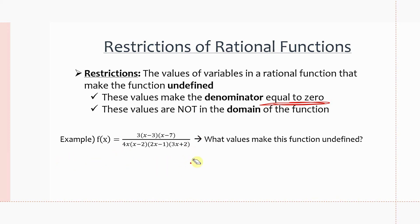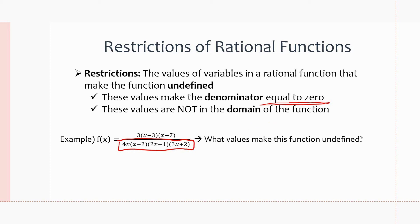We don't need to worry about the numerator, because if the numerator equals zero over a number, this just equals zero — it's not undefined. So we just need to worry about the denominator. We have four factors multiplied together, so we need to find what x value in each factor makes that factor zero, because if one factor is zero, the whole denominator will be zero.